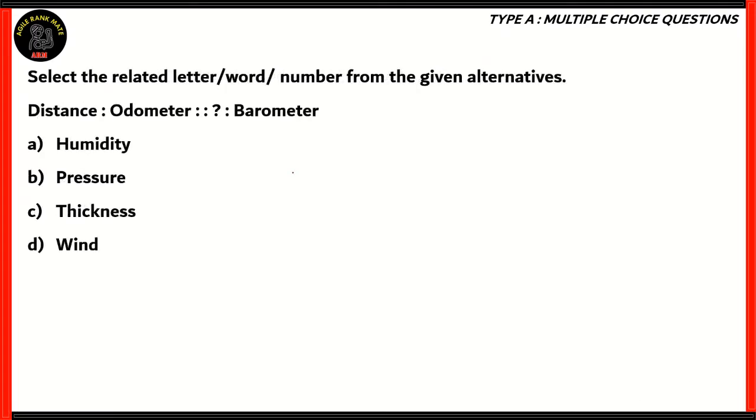Let's look at another question. This is a relation type of question. We need to find out the related letter, word, or number from the given alternatives. Distance is related to odometer. Similarly, what word is related to barometer? The options are humidity, pressure, thickness, wind. If you know what an odometer is, it's a device in your car. The purpose of the odometer is to measure distance.